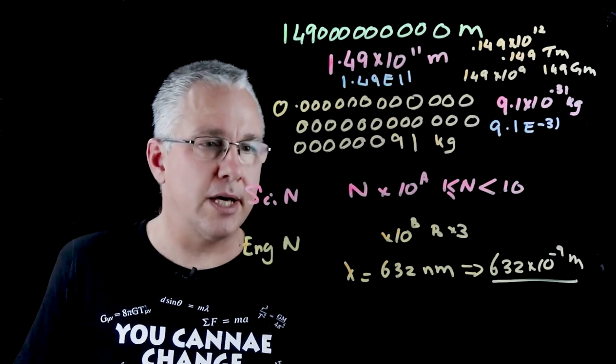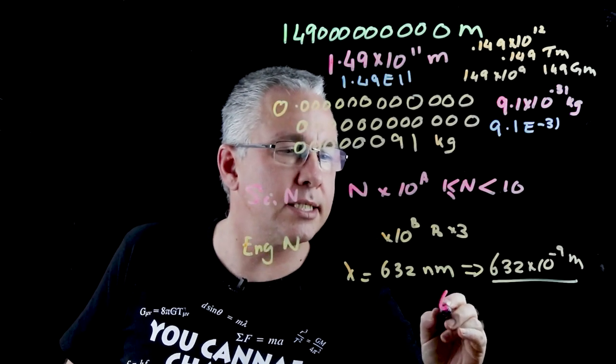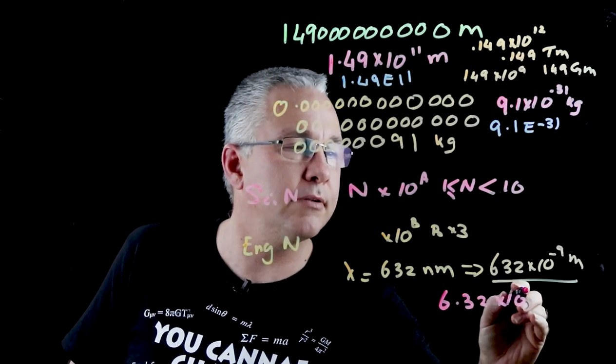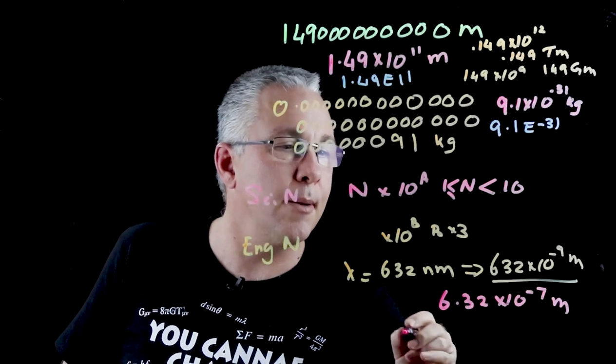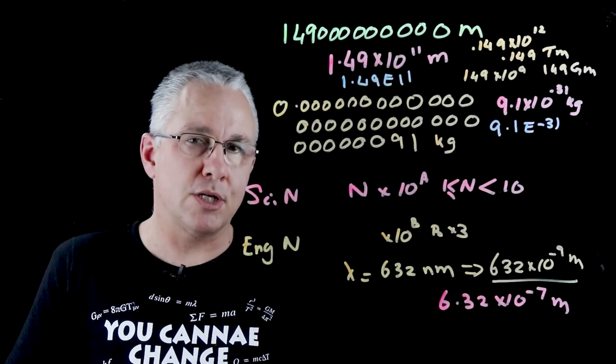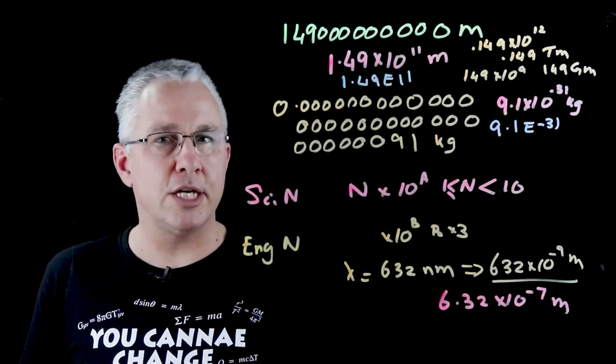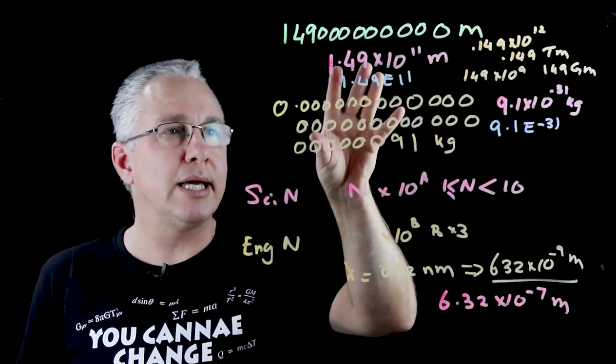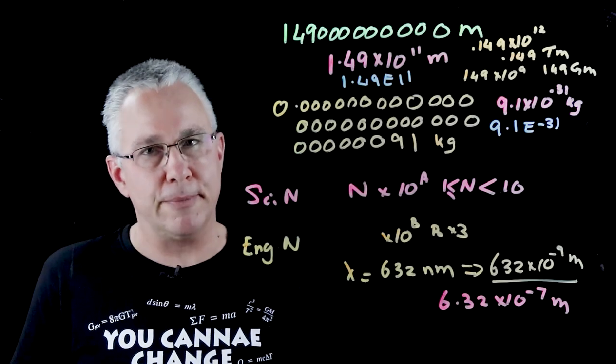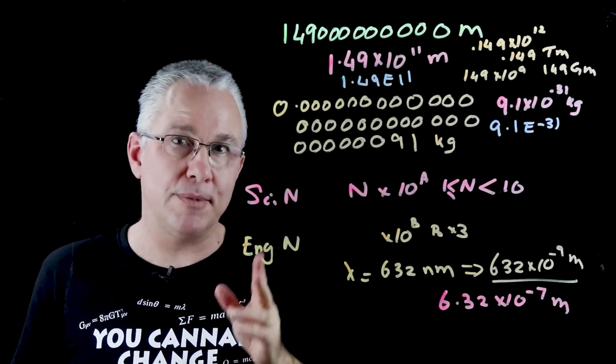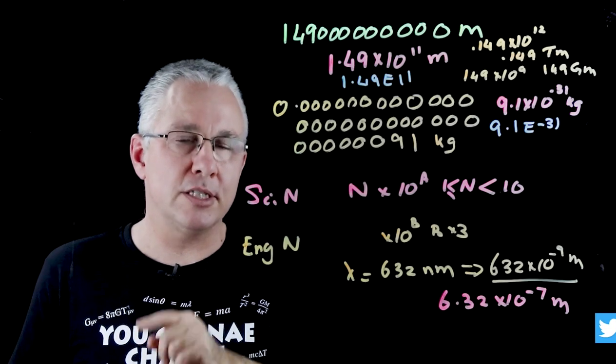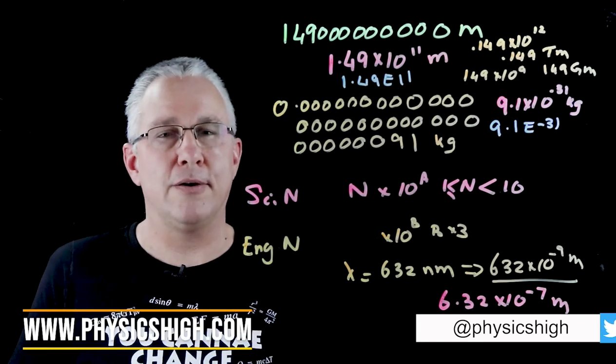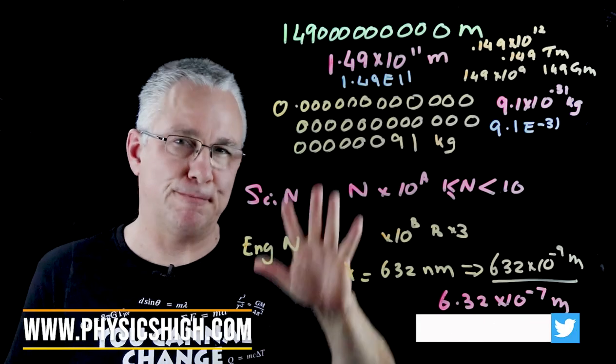If I want to now write this in scientific notation, that's 6.32 × 10^-7 meters. Both are the same numbers. So, there you have it, scientific notation and engineering notation, and how we use it to make a little more sense of the numbers. I'm Paul from Physics High. I hope that has helped you. Please like, share and subscribe. Hit a comment down below if it's been helpful for you. Take care. Bye for now.